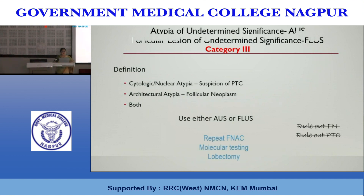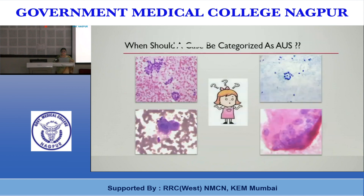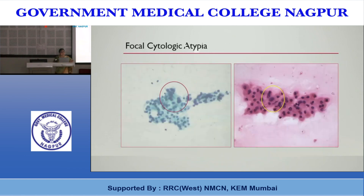We will discuss follow-up modalities for the AUS category later. When should a case be categorized as AUS? The prerequisite is that the specimen must meet adequacy criteria: at least 6 groups, each comprising at least 10 to 12 cells. An adequate specimen can be mildly cellular, moderately cellular, or profusely cellular.